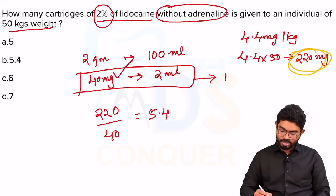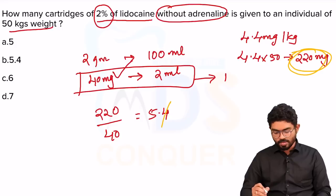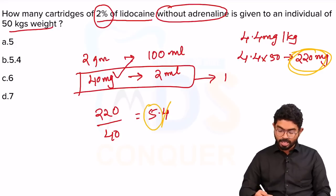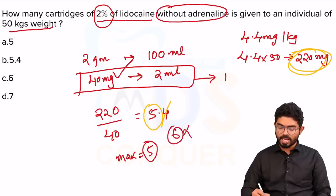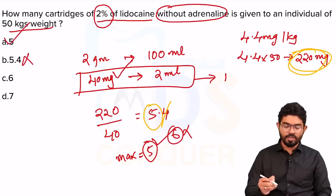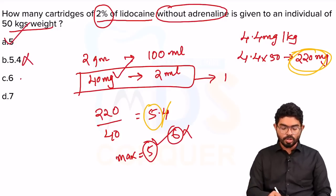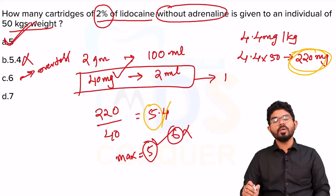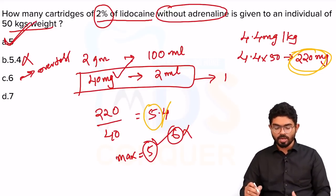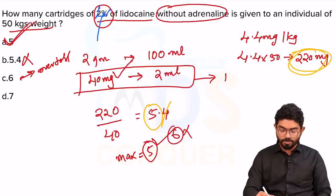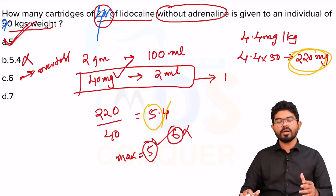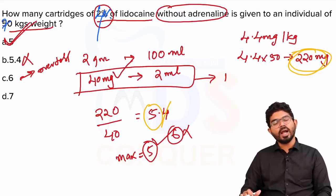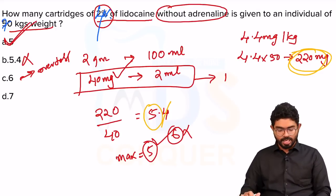You can calculate 5.4 cartridges, but there is no 0.4 of a cartridge — so the maximum you can give is 5 syringes or 5 cartridges. 6 cannot be given; 6 will lead to overdose. So the answer is 5. They can ask similar questions with 4% solution or 70 kg body weight — get prepared for such questions.